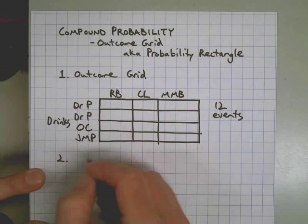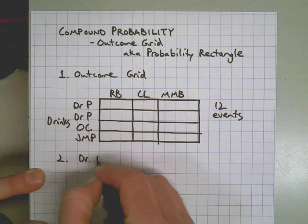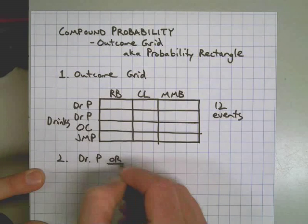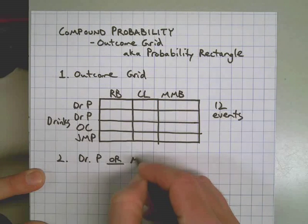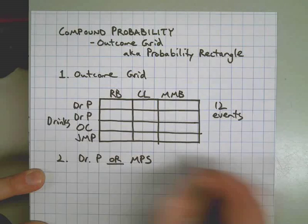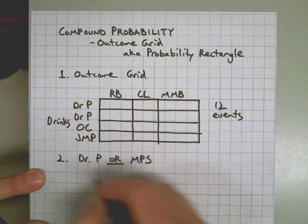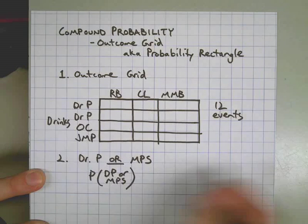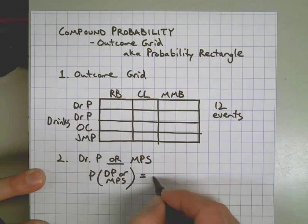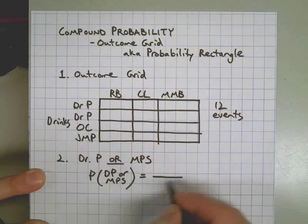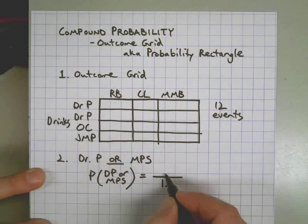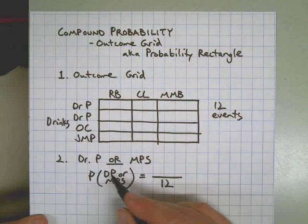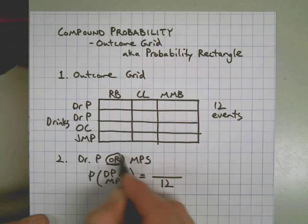Question two, we want Dr. Pepper or Mashed Potato Soda. What's the probability? So we have probability of Dr. P or Mashed Potato Soda equals, we have 12 possible events. We need to figure out how many of them were going to give us a Dr. Pepper or, that's the keyword here.